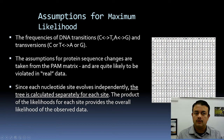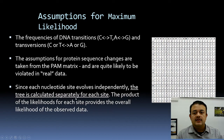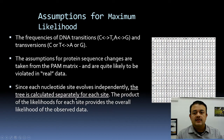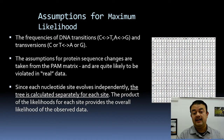The assumptions about protein sequence changes are taken from the PAM matrix and are quite likely to be violated in real data. For DNA sequences it is simpler — just transition probability and transversion probability (kappa). Another assumption is that each nucleotide site evolves independently; the tree is calculated separately for each site and the product of likelihoods for each site provides the overall likelihood for the data.